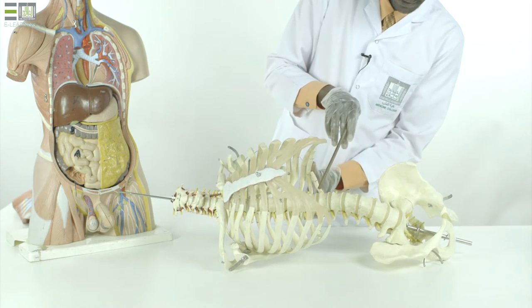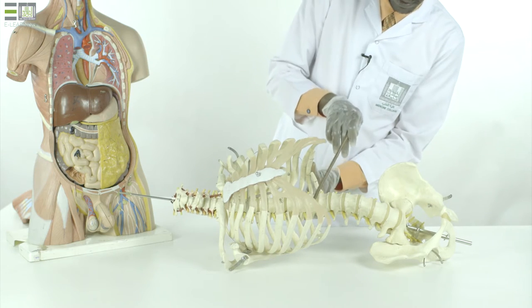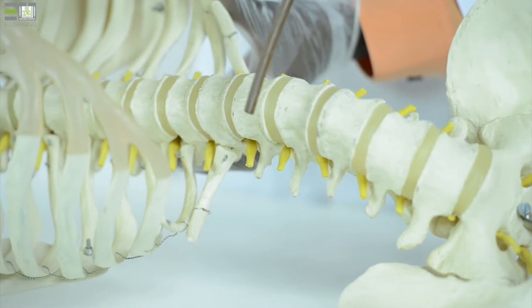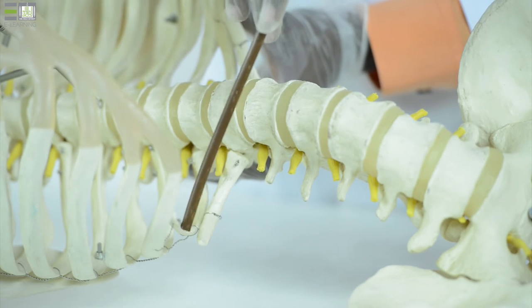Superiorly, part of the abdominal viscera are hidden behind the lower part of the thoracic cage, so they are related to the 11th and 12th rib.